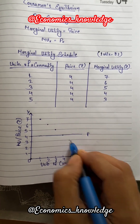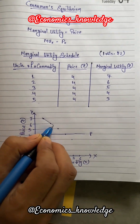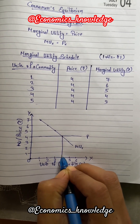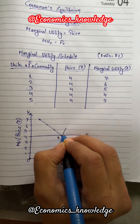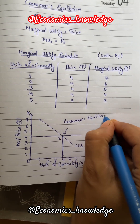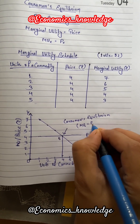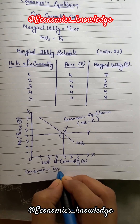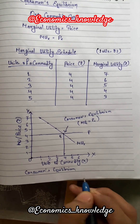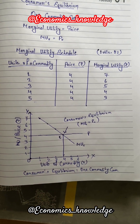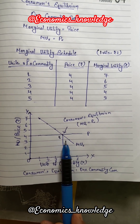At the fourth unit, MU equals price, which is the condition of consumer equilibrium in the one commodity case. In the diagram, units of a commodity are shown on the x-axis and price and marginal utility on the y-axis. The price line intersects the falling MU curve at point E, so the consumer's equilibrium will be at point E when the consumer consumes four units of the commodity.